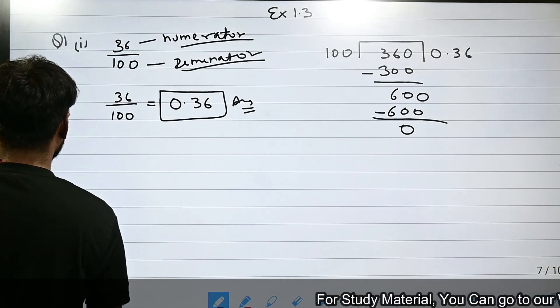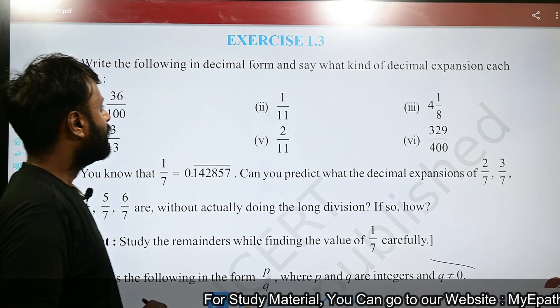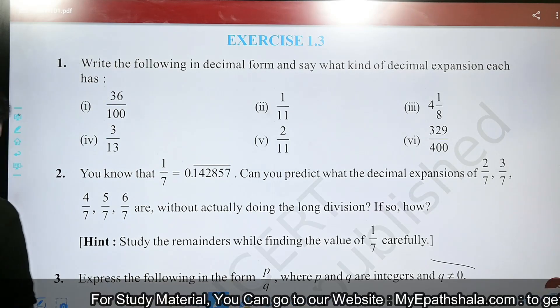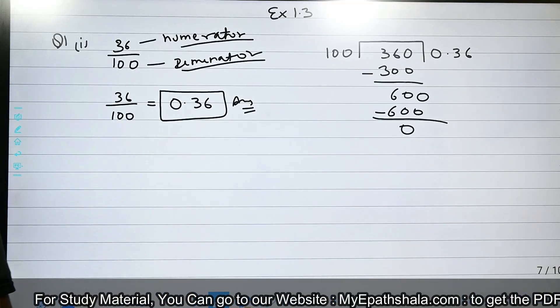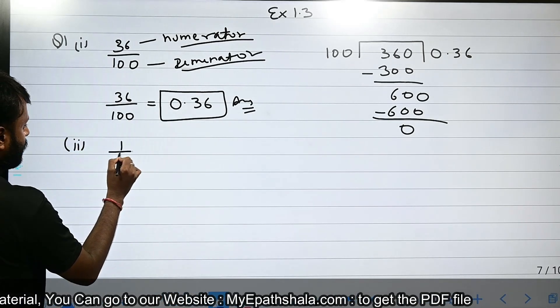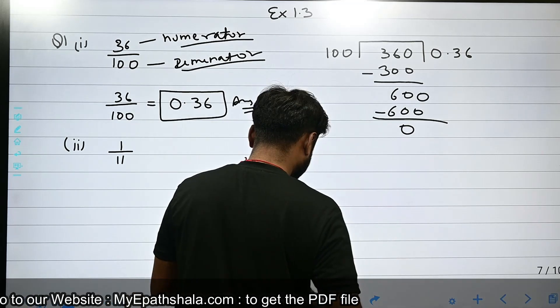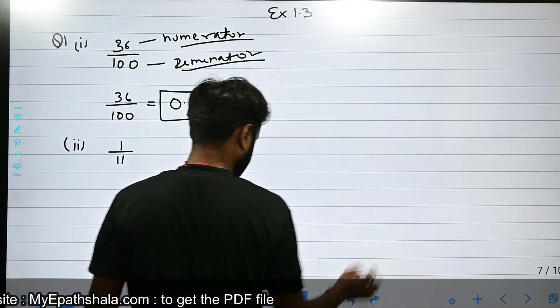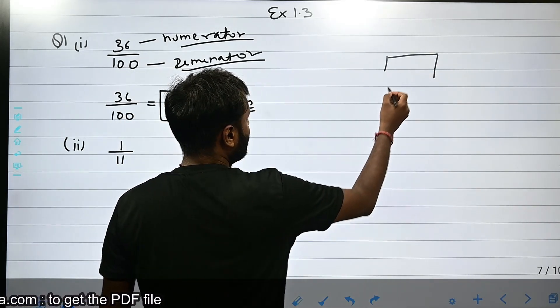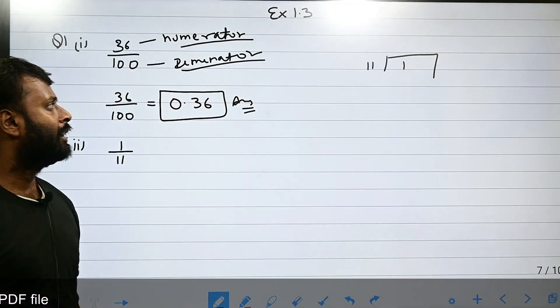Now let's see the second question. The second question is 1 by 11. Let's see the decimal expansion. We will divide. Numerator 1 and denominator 11.